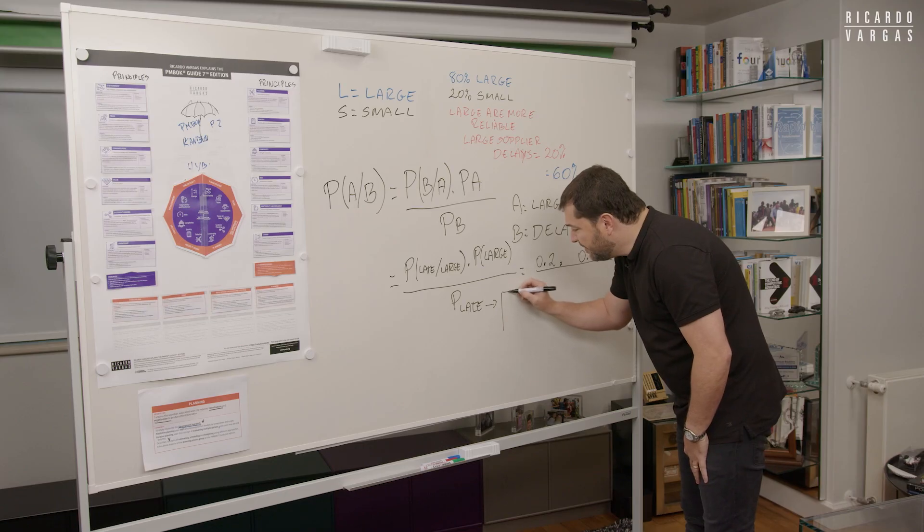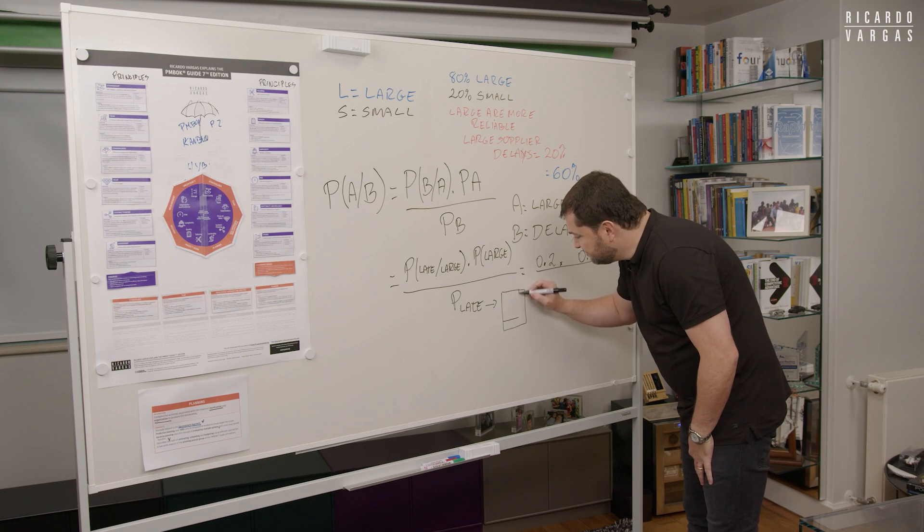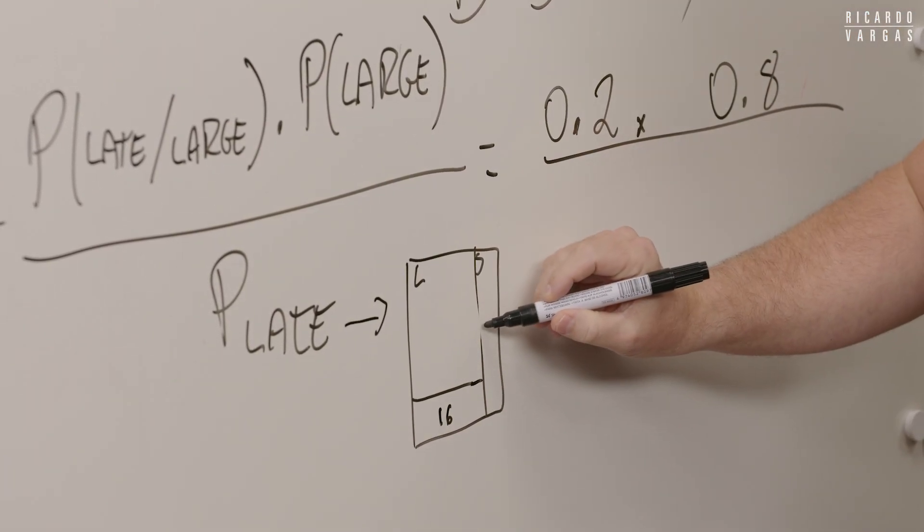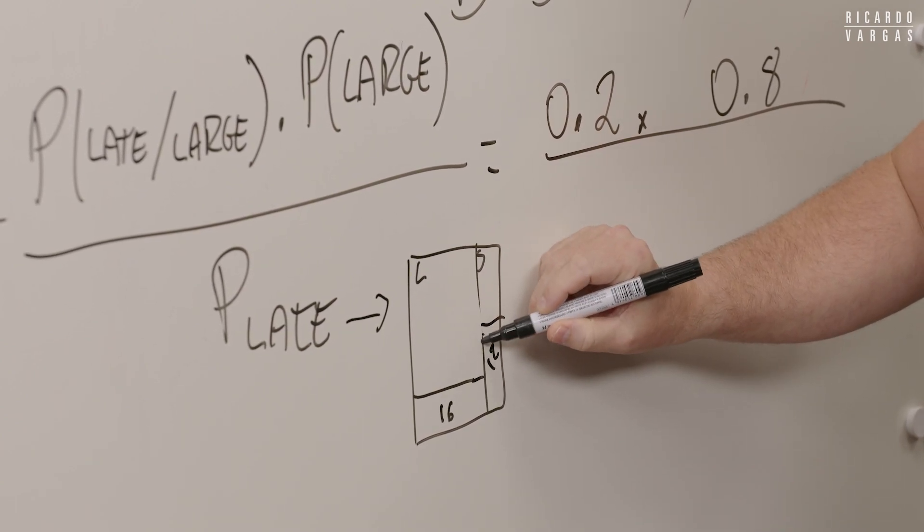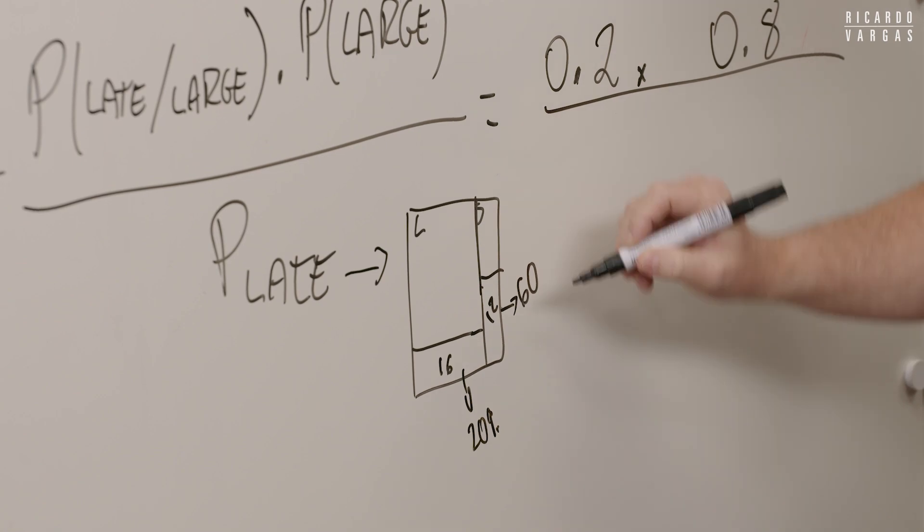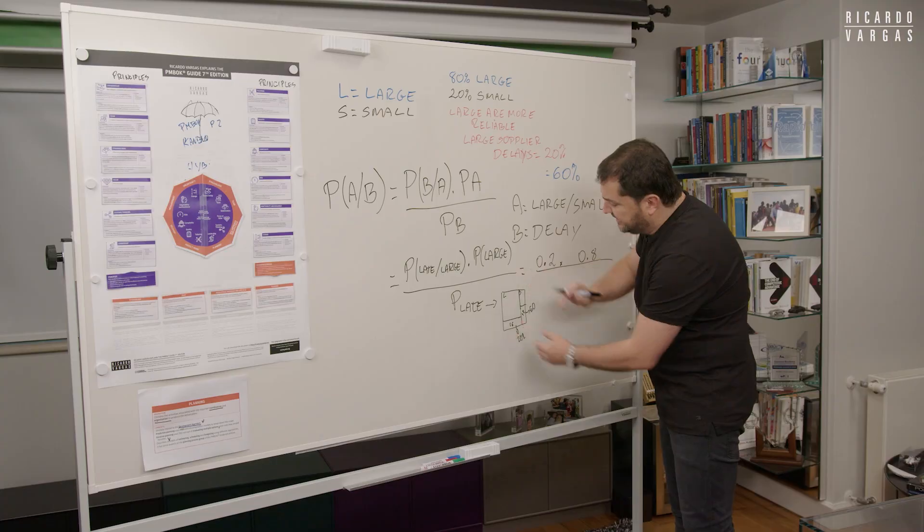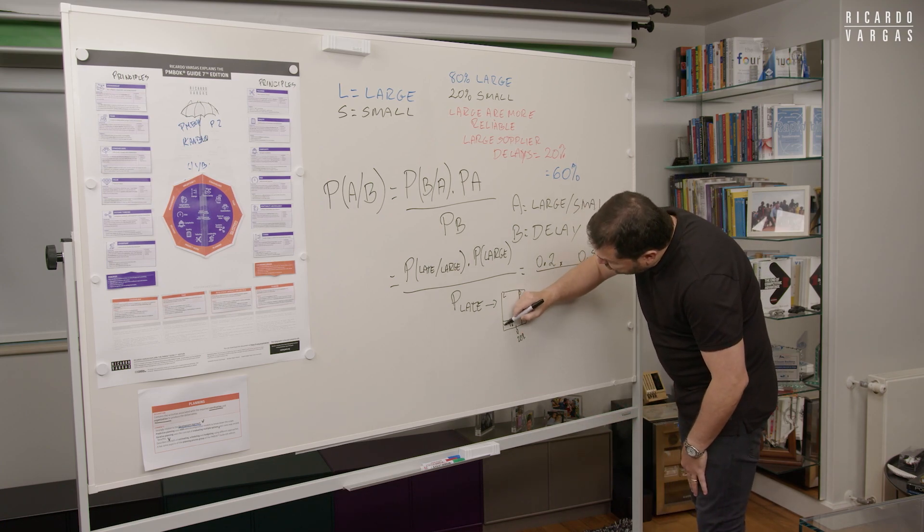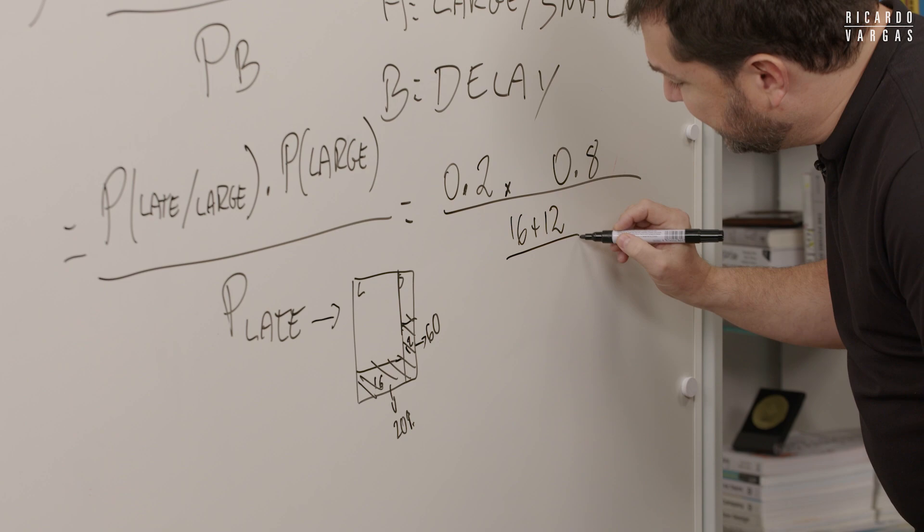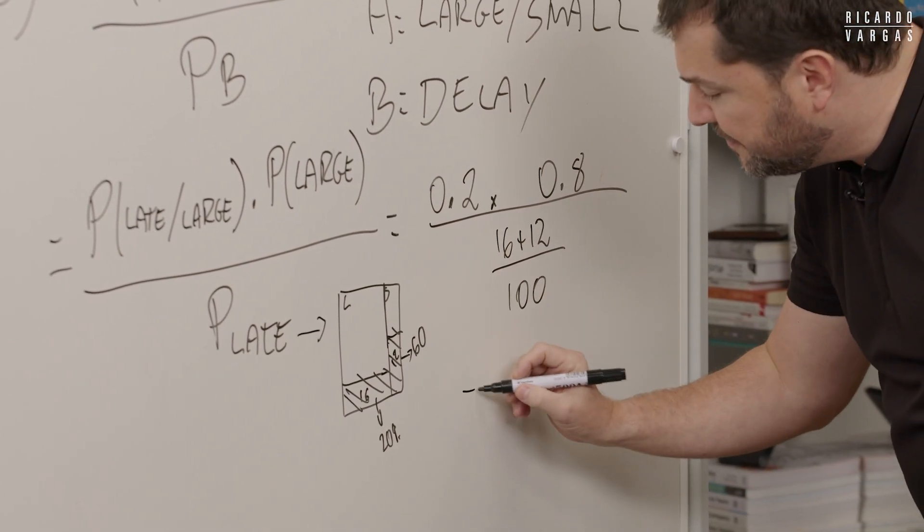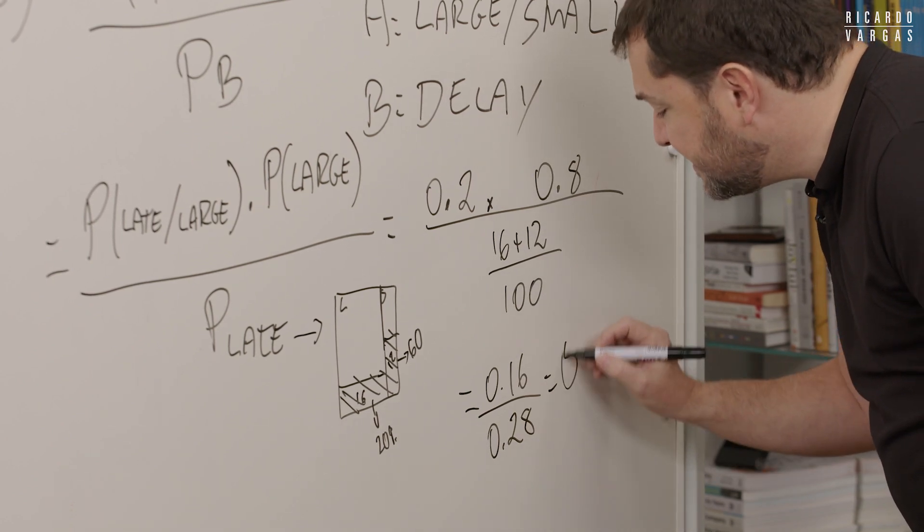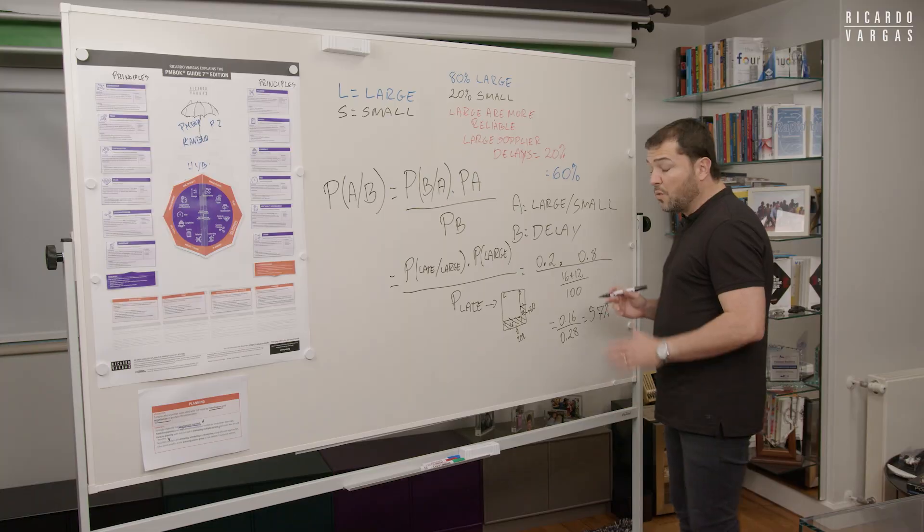Probability of being late given it's large is already given. 20% of large suppliers delay. So large delay 20%, 0.2 times the probability of being large, 80% are large, 0.8. So the probability of being late, let's just remember. Remember that board where I did the small and the large here. This piece were 20%, 16 out of 80. And this group of small were 12 out of 20. 60% and 20%. Remember 60% of 20 and 20% of 80. So what I do, I just add because being late is all this group. So 16 plus 12 divided by 100. This will be 0.16 divided by 0.28. That is the same 57% approximately.